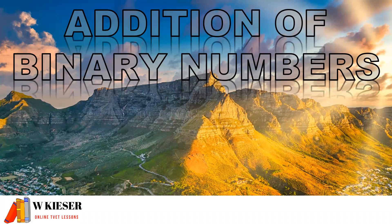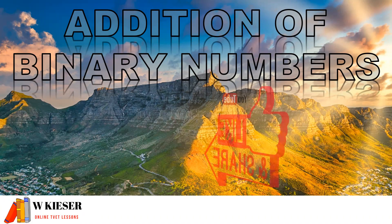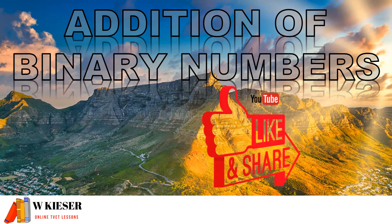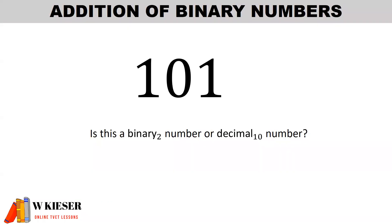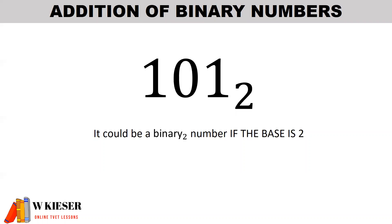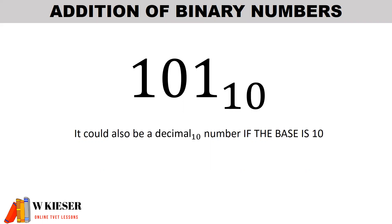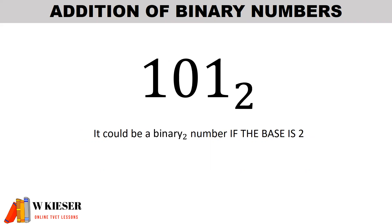Welcome to my YouTube channel, called Wkiza. In this video we'll be looking at the addition of binary numbers. The number 101 could be a binary number or a decimal number — for example, it could represent the decimal number 101 from the movie '101 Dalmatians'. A binary number will have a base of 2, and a decimal number will have a base of 10, so binary is denoted with a subscript 2 and decimal with a subscript 10.